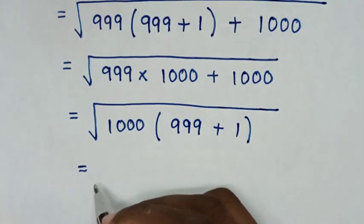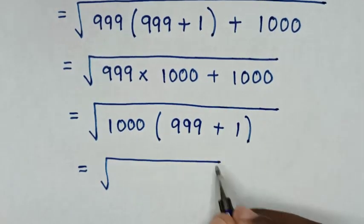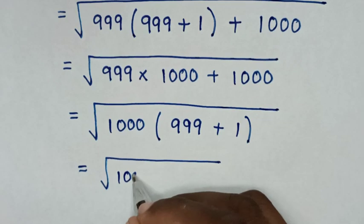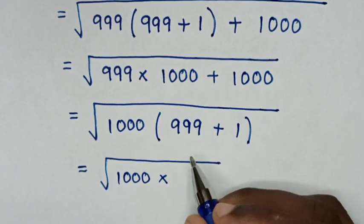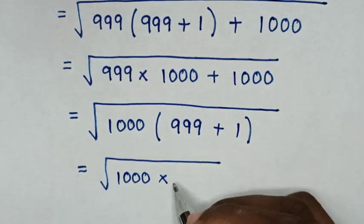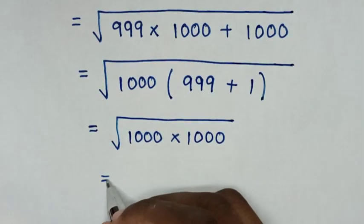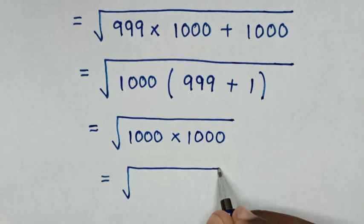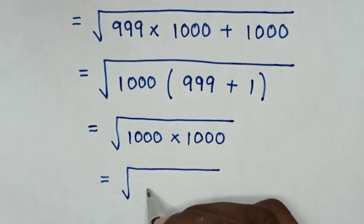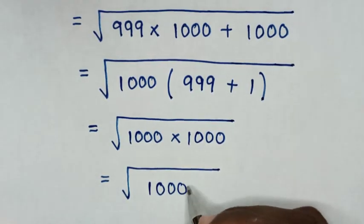Then in next step it will be equal to square root of 1000 times 999 plus 1 is 1000. So it will be equal to square root of 1000 times 1000 is 1000 square.